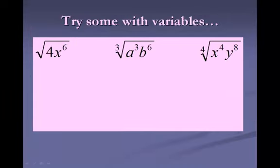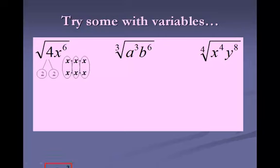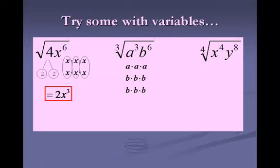Let's try some with variables. On the first one, we're doing the square root of 4x to the 6th. We break down the square root of 4 — it's a square root, so we need 2 of the same number, and we have that with our 2s. With x to the 6th, I draw out 6 x's putting them in groups of 2 at a time — that's 3 complete groups. So 2 for the coefficient and x to the 3rd to represent 3 groups of x's. On the next one, I draw out 3 a's and 6 b's putting them in groups of 3 of a kind — that's 1 group of a's and 2 groups of b's, so a times b squared is the final answer.